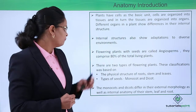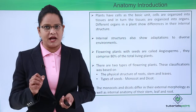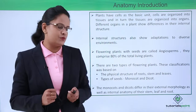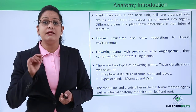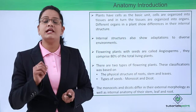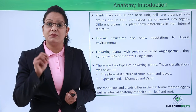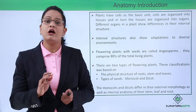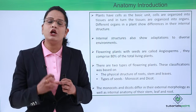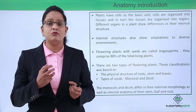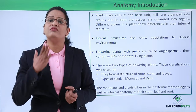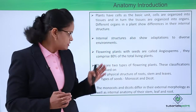Flowering plants — another term for them is angiosperms. They constitute around 80% of the total living plants, meaning 80% of all living plants are angiosperms, that is, seed-bearing flowering plants. These flowering plants are further divided into categories depending on what type of root, stem, and leaves are present, and the basic division is on the basis of the seeds present in them.